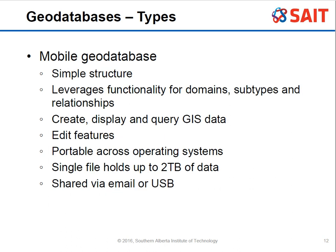The mobile geodatabase has a very simple structure so it's easy to work with. It leverages domains, subtypes, and relationships, so you can still do meaningful functionality. It's not as powerful as the file geodatabase, but everything is available online. You can create, display, query, and edit features with it. It's also portable across operating systems — Mac, Windows, or Linux — and a single file can hold up to two terabytes.